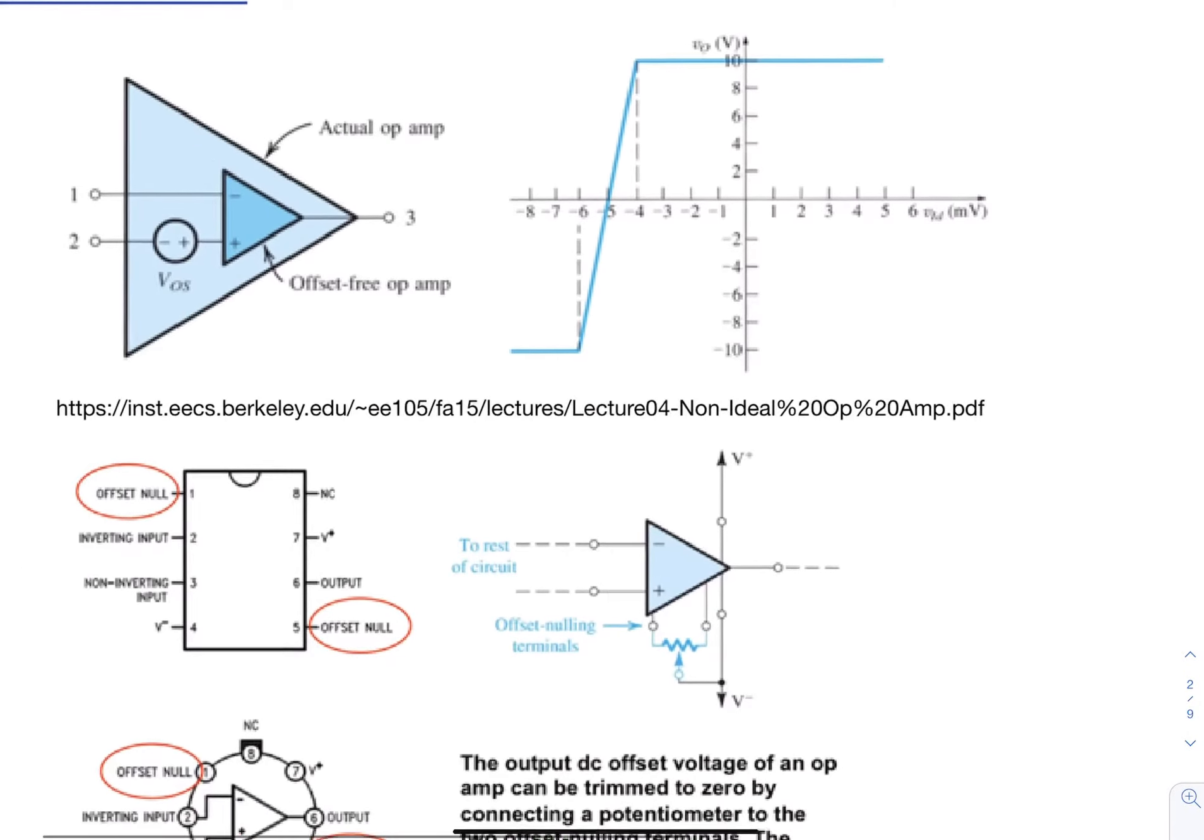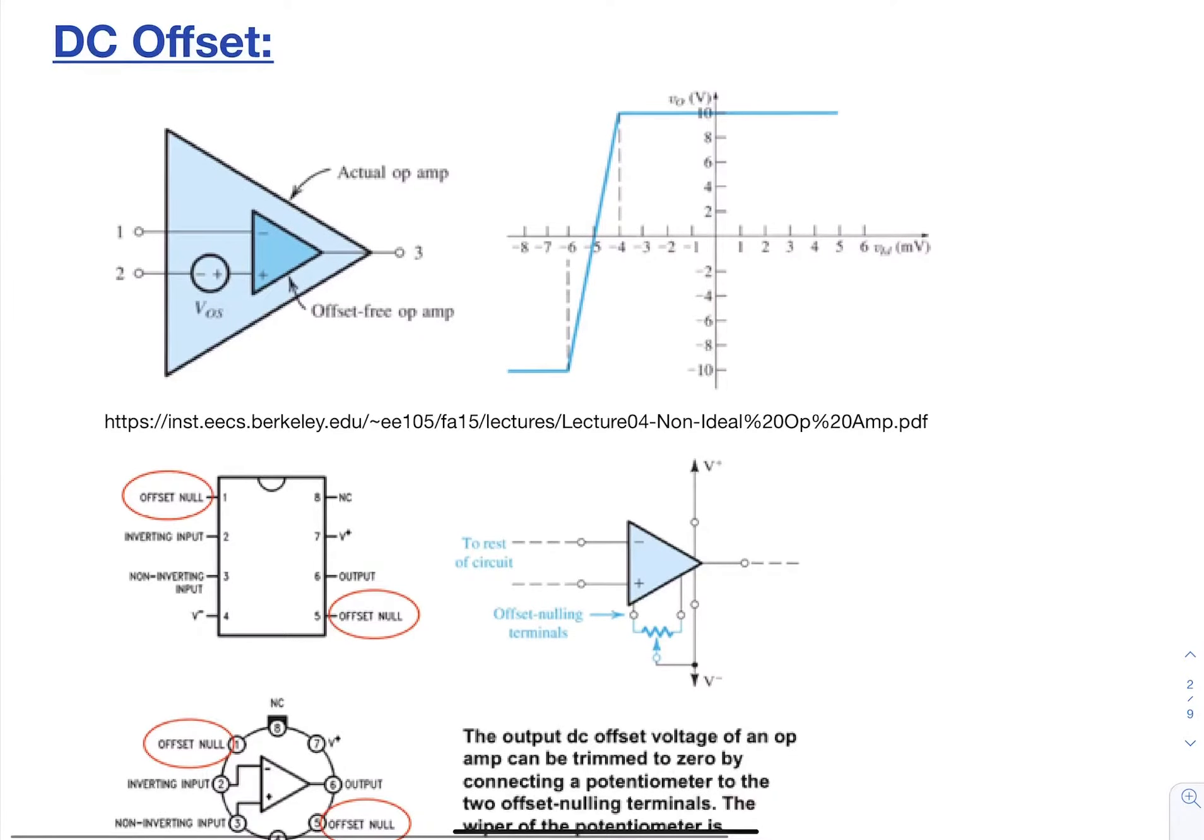So for DC offset, what actually is happening is that there is an offset inside, so when I do apply zero volts to both of these inputs, I expect to have zero volts out. What I see is an actual shift. So instead of being at zero volts for my zero volts in, my output graph will actually be shifted. And so it will look something like this, where it's actually shifted by an amount.